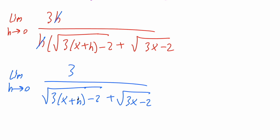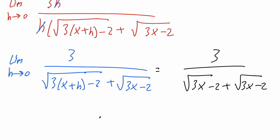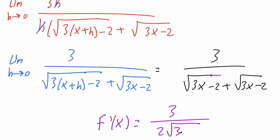Now we replace h with zero. You'll notice we have the exact same thing for both terms, so we have two times of it. We get three divided by the square root of three x minus two, plus the square root of three x minus two. Simplifying one more time, our final answer — the derivative — is equal to three divided by two times the square root of three x minus two. And that's all we need to do to solve this problem using the definition of a derivative.